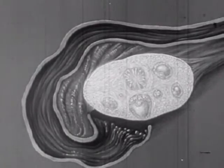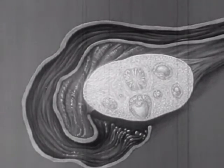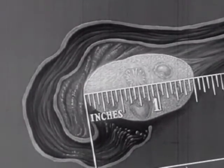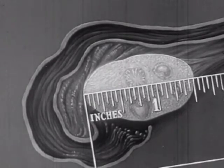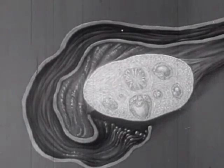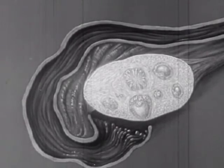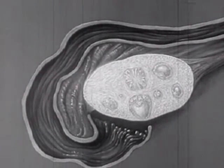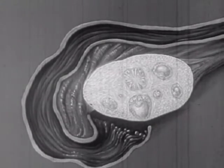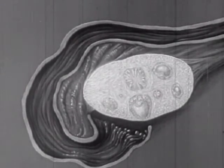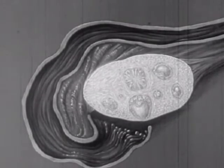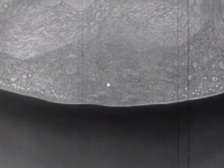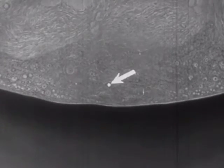The ovary is a gland in which eggs are constantly being formed. Each almond-shaped ovary is about an inch and a half in length. Besides producing eggs, these glands secrete fluids into the blood which are responsible for the development of female characteristics in other parts of the body, such as breasts, hair, and skin. But from puberty on, the primary function of the ovaries is the production of eggs. In a closer view, we can watch the development of an egg.